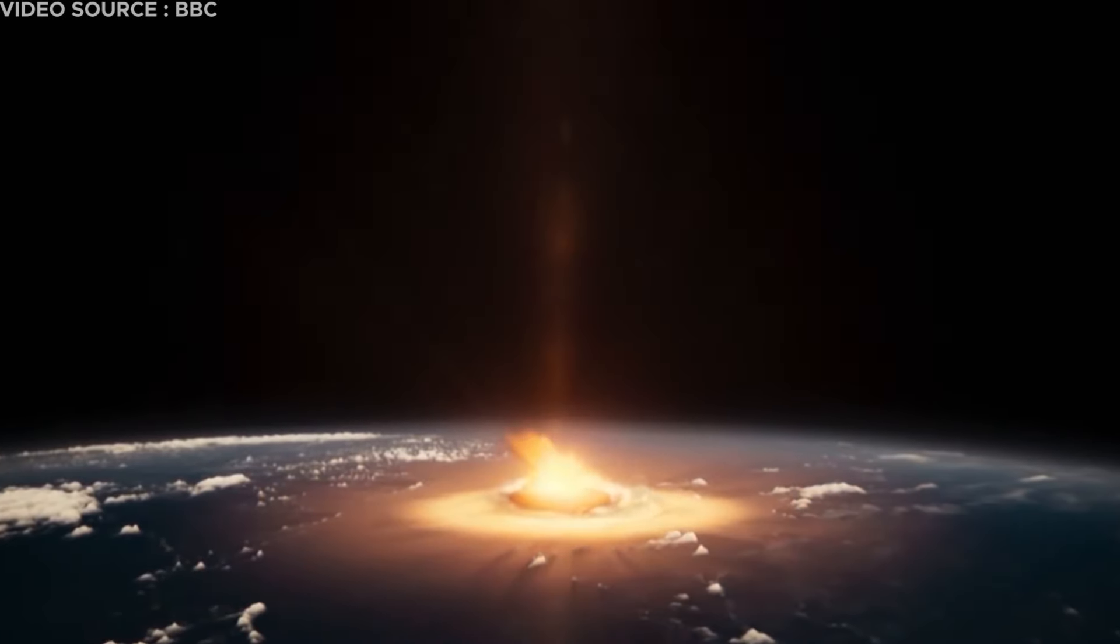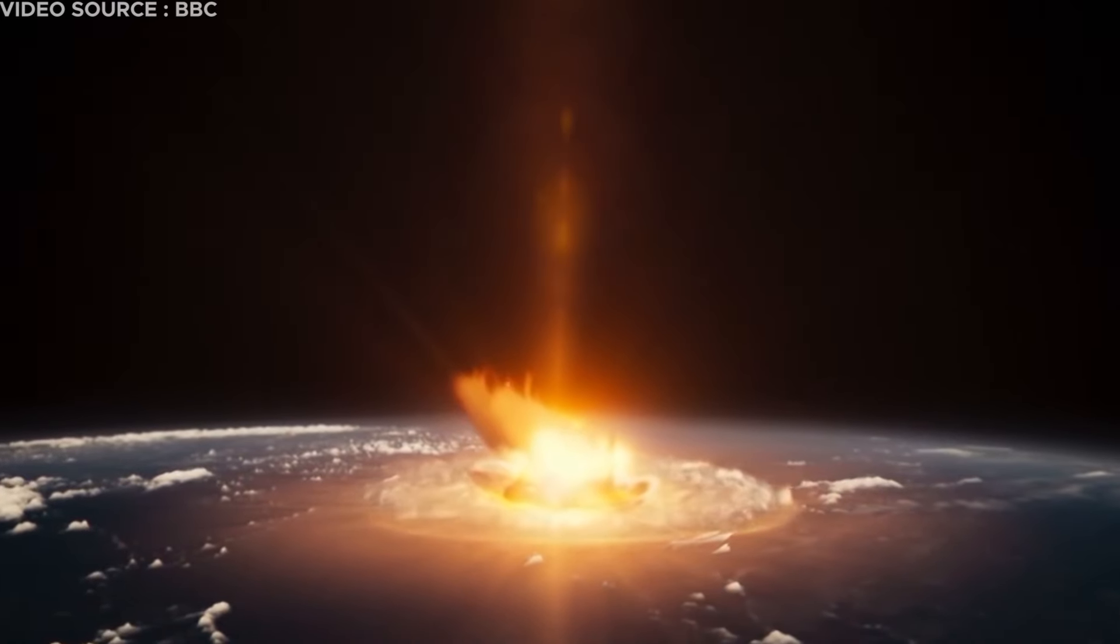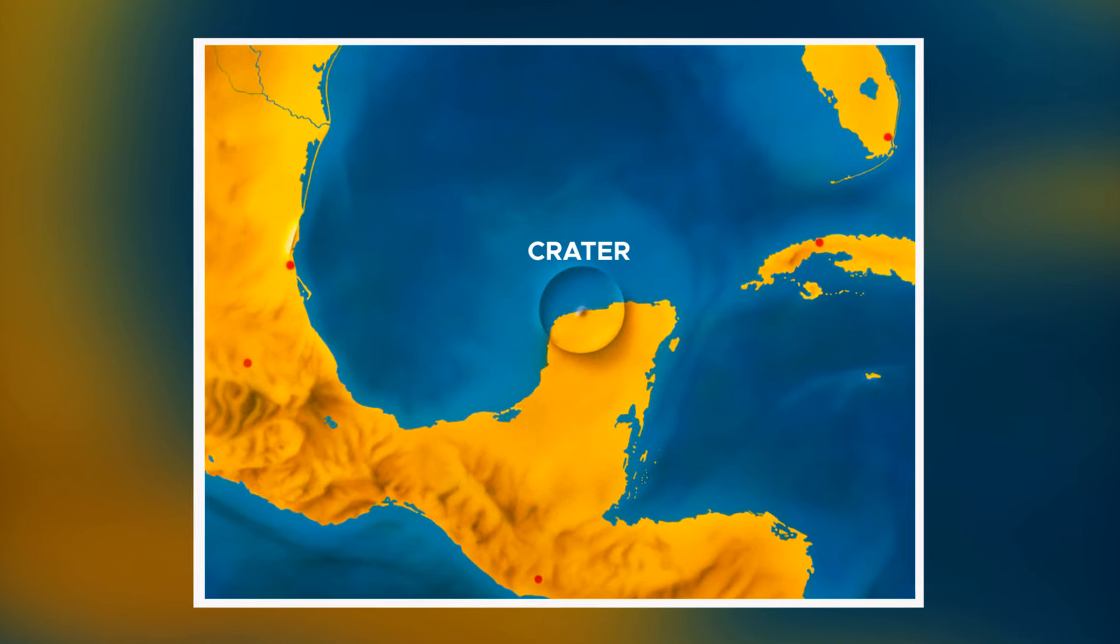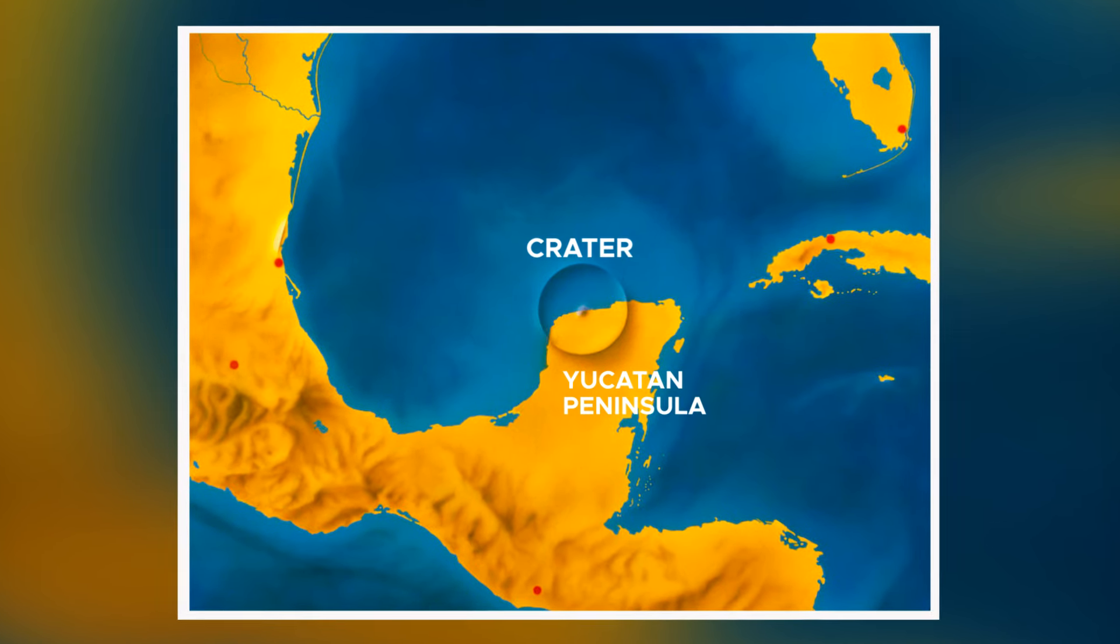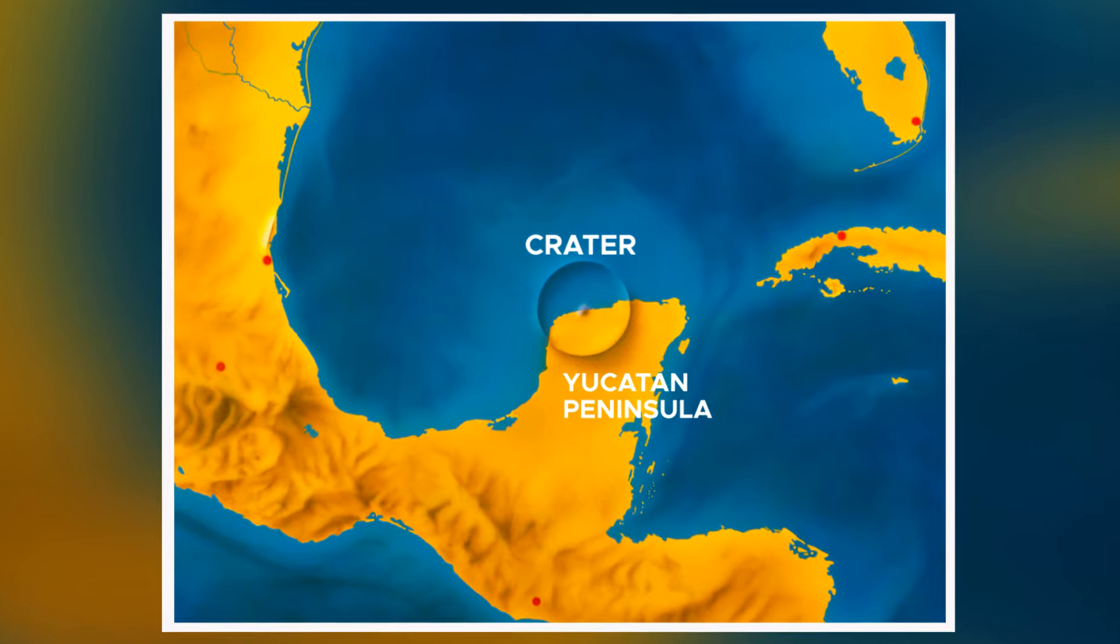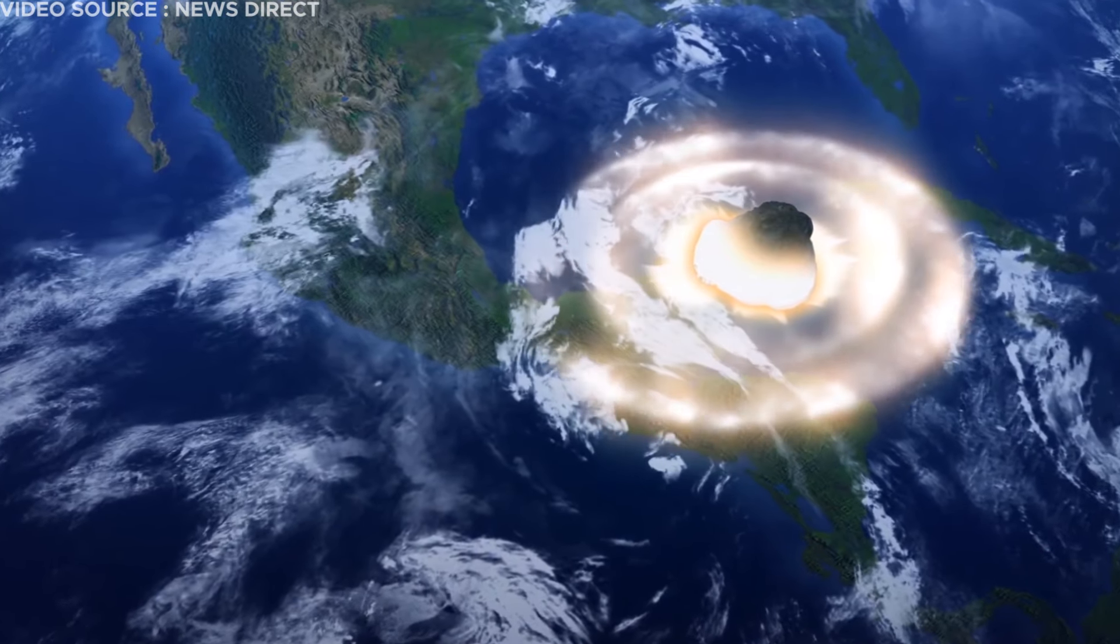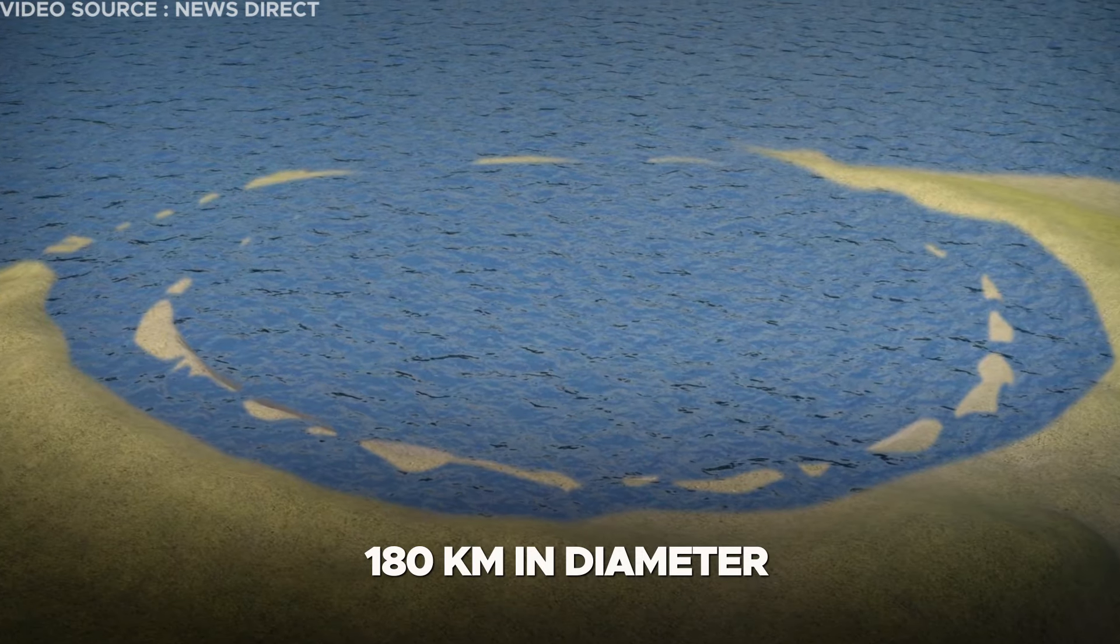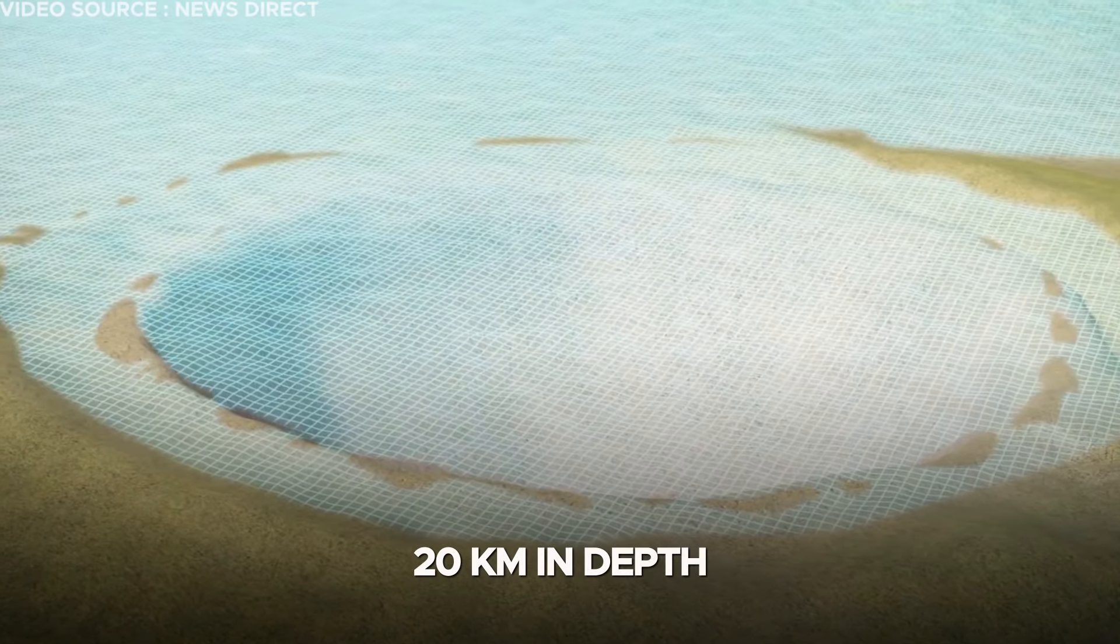The impact of this asteroid, responsible for the demise of dinosaurs, formed a crater on the periphery of the Yucatan Peninsula in Mexico. The estimated dimensions of the crater are 180 kilometers in diameter and 20 kilometers in depth.